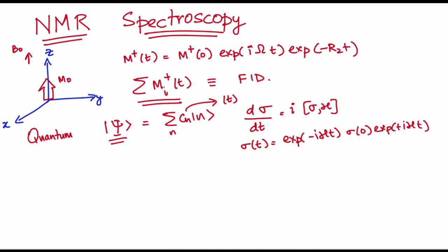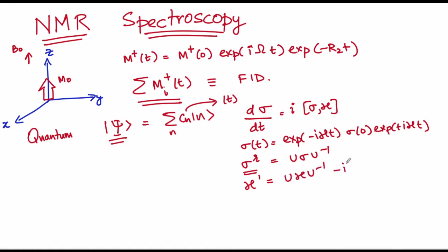This came with the caveat that the Hamiltonian has to be time independent. Therefore, we did see a way of transformation where the density matrix is transformed with a unitary matrix where the Hamiltonian, which was previously time dependent, could also get converted into a time independent Hamiltonian following this conversion.